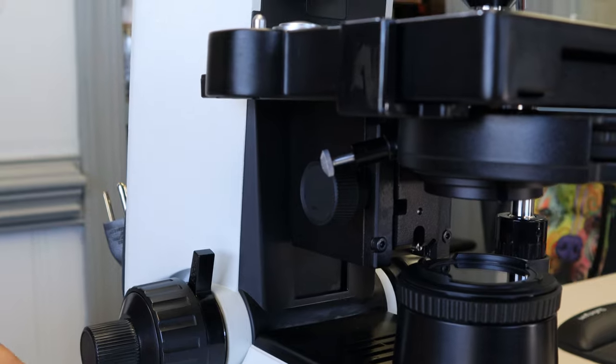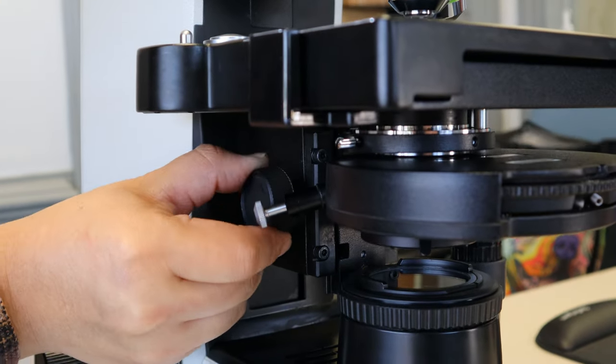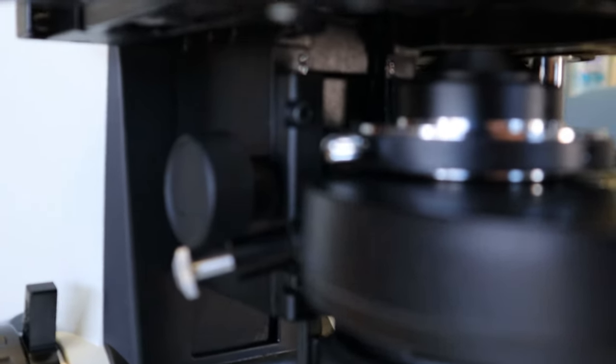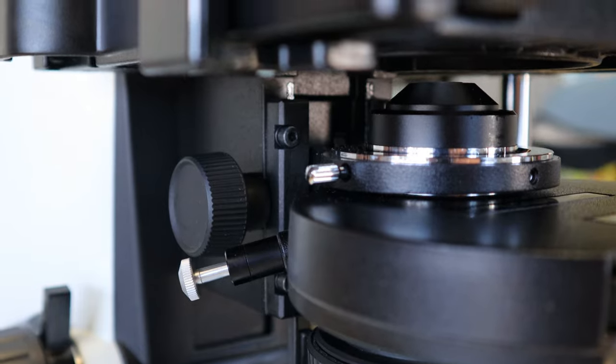Once the condenser assembly is all the way down, it's going to expose a little silver knurled screw with a slot for a flat-headed screwdriver. This is what you're going to use to release the condenser.